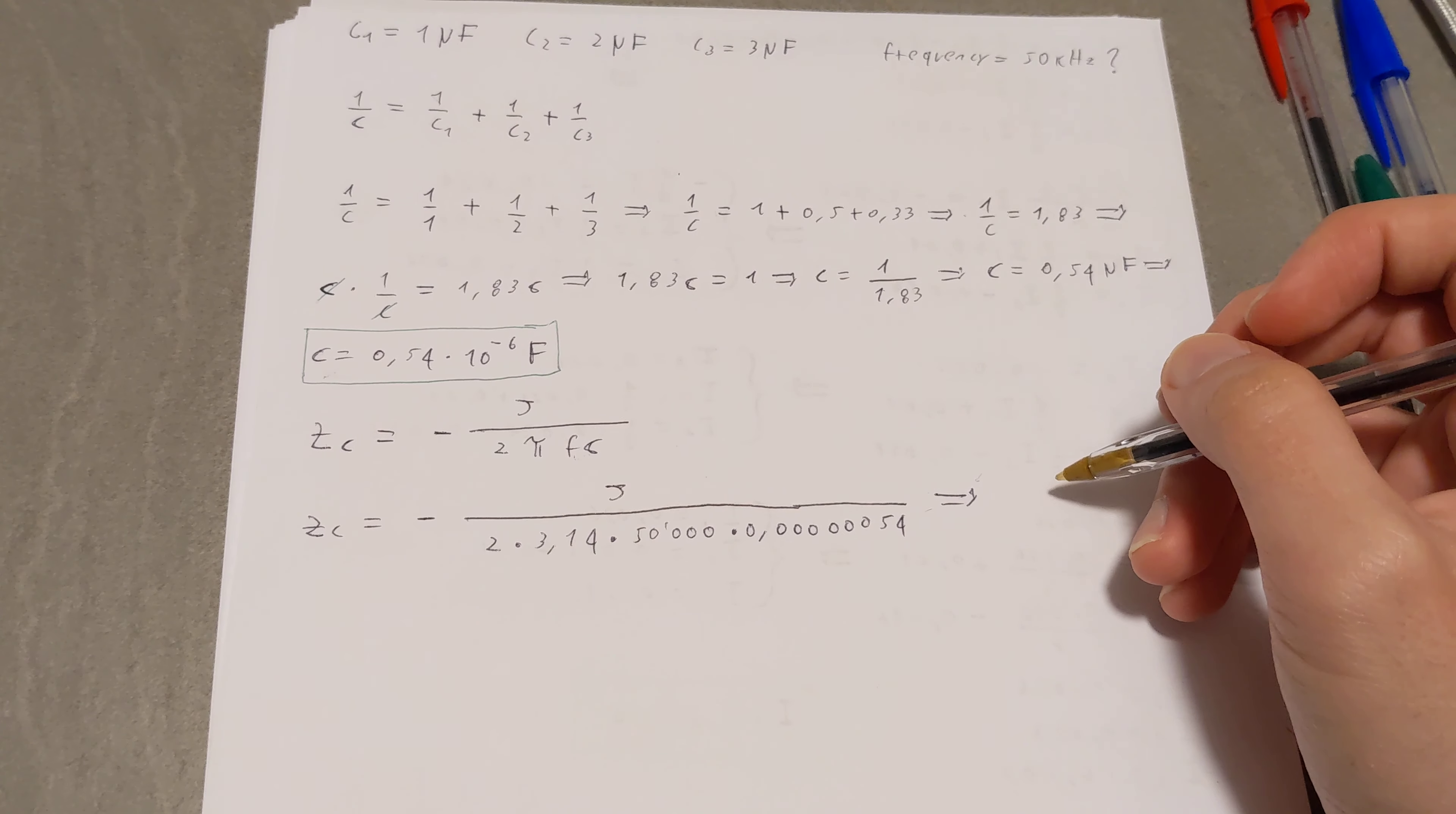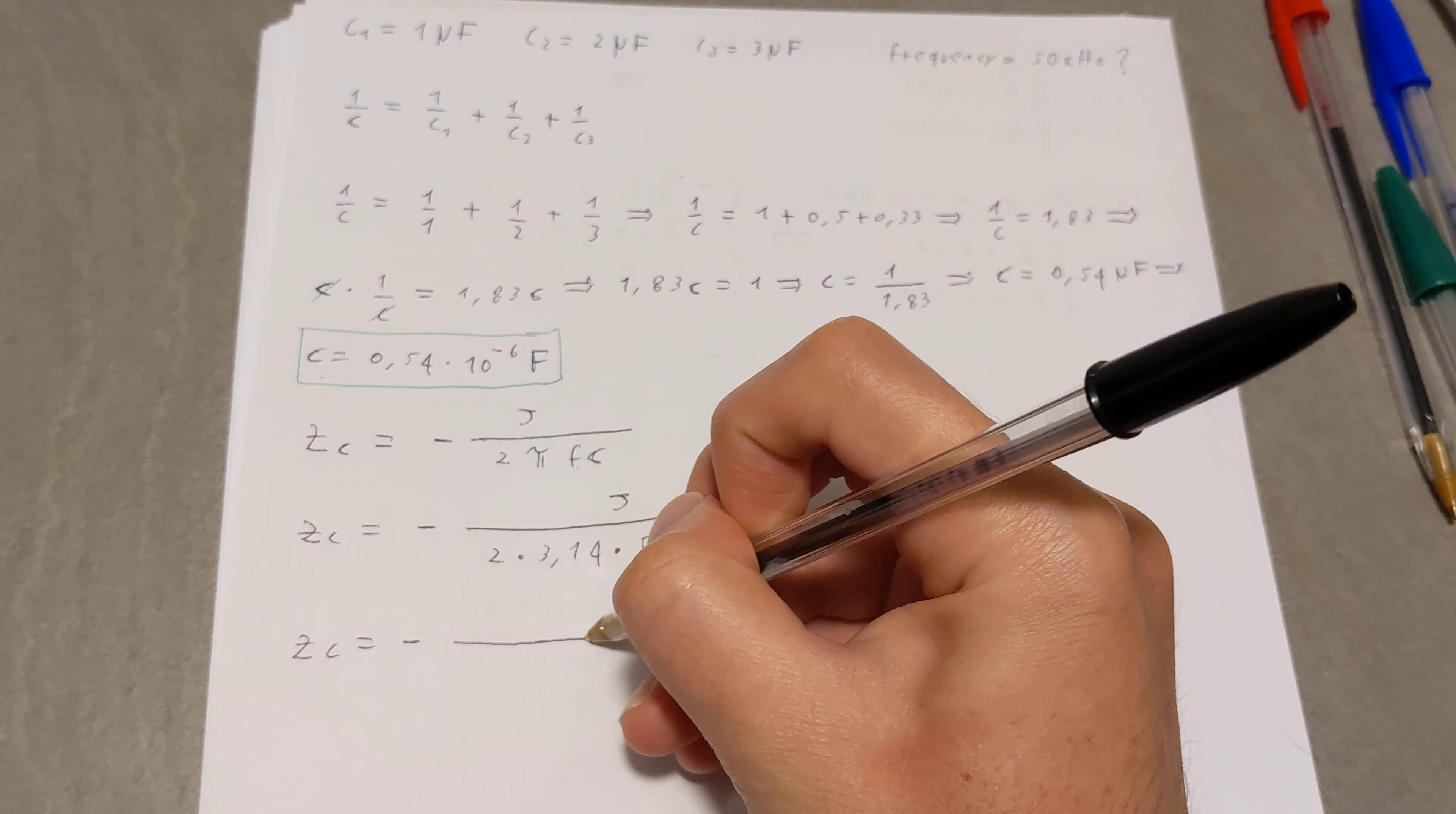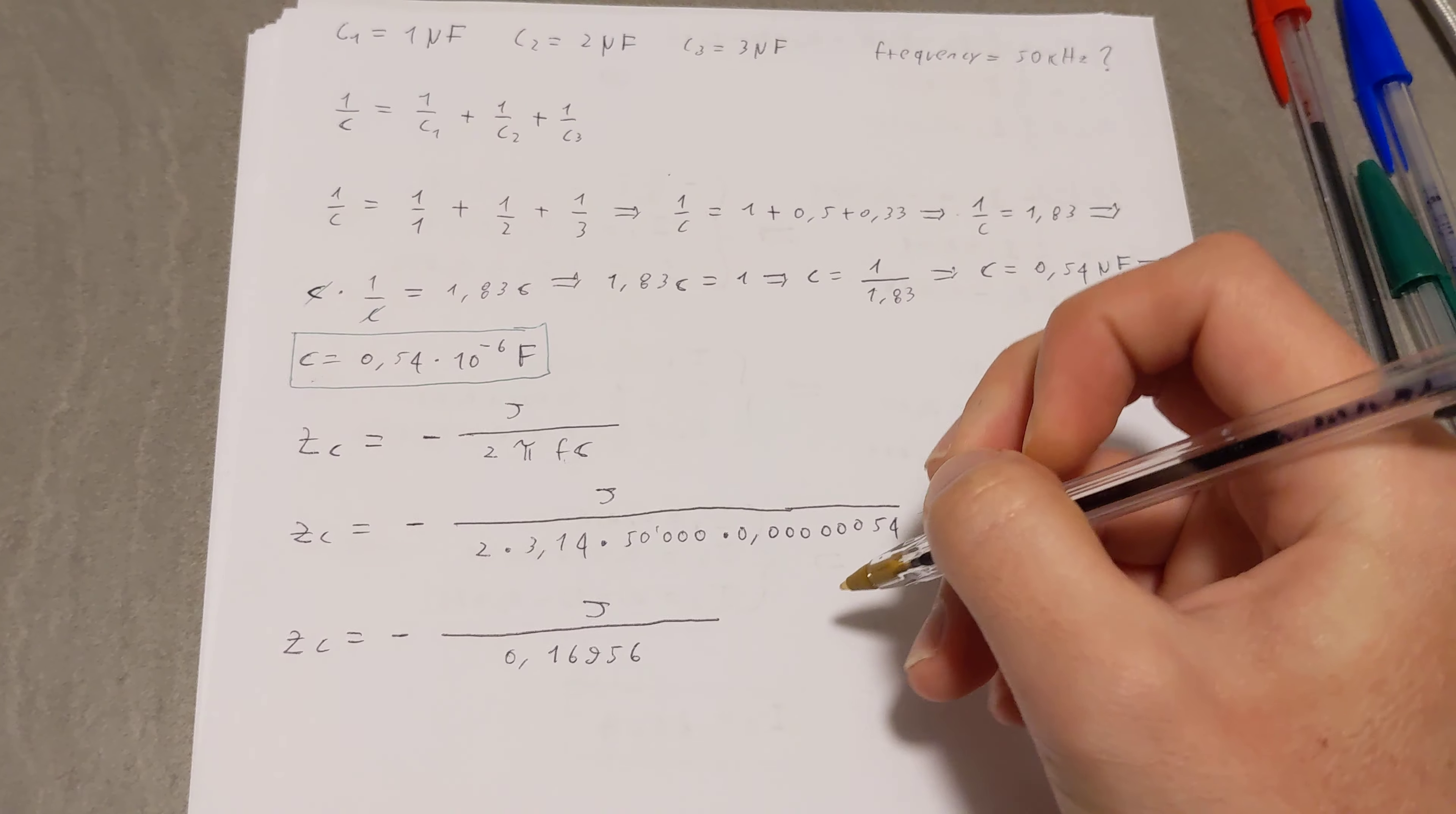So again, computation-wise, ZC is equal to negative J over this whole multiplication here, which gives us 0.16956.